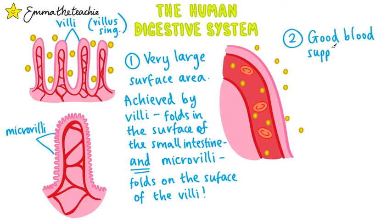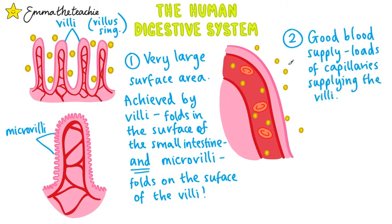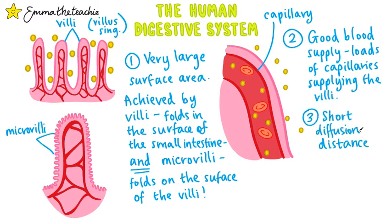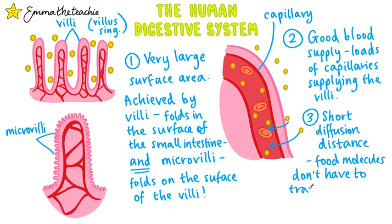Secondly, the small intestines have a good blood supply. There are loads of capillaries supplying the villi. This ensures that any food molecules absorbed are quickly taken away to other tissues, maintaining a steep concentration gradient, which results in faster diffusion. Thirdly, the small intestines have a short diffusion distance — this is the distance from the food molecules to the bloodstream. As the food molecules don't have to travel very far, this means it's a faster rate of diffusion.